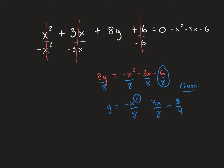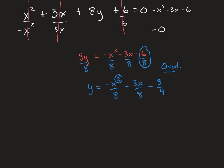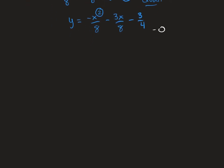The problem also says to graph it. To graph a quadratic, I think the easiest way is always to first find the vertex. The formula for the x-value of the vertex — remember, your vertex is going to be a point where you have an x and a y — is negative b over 2a.